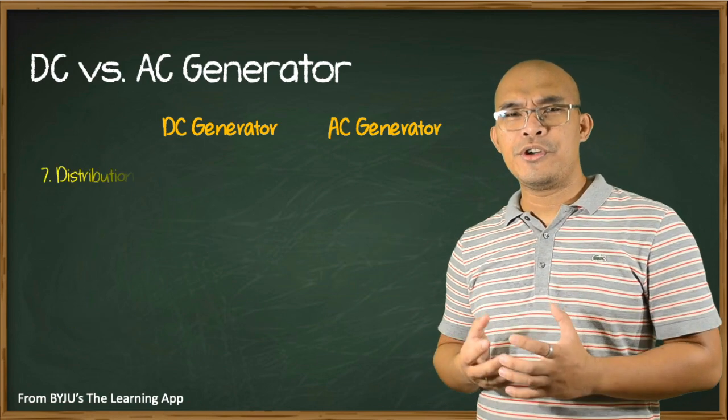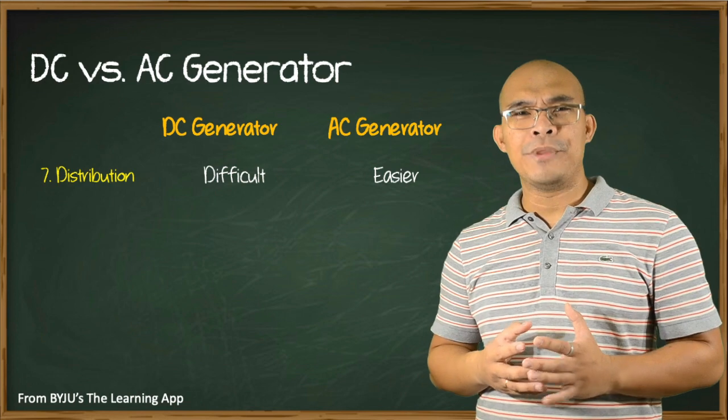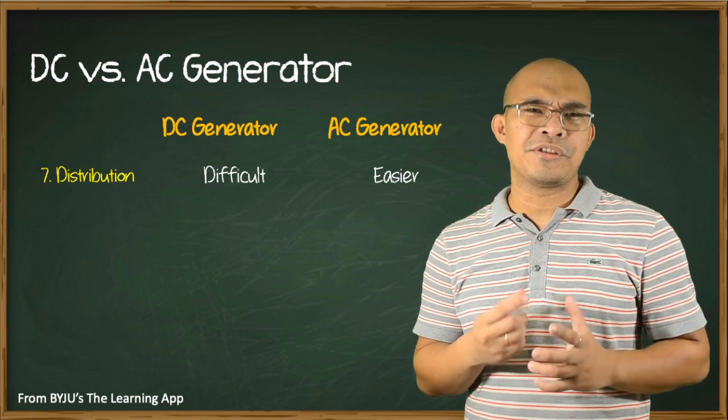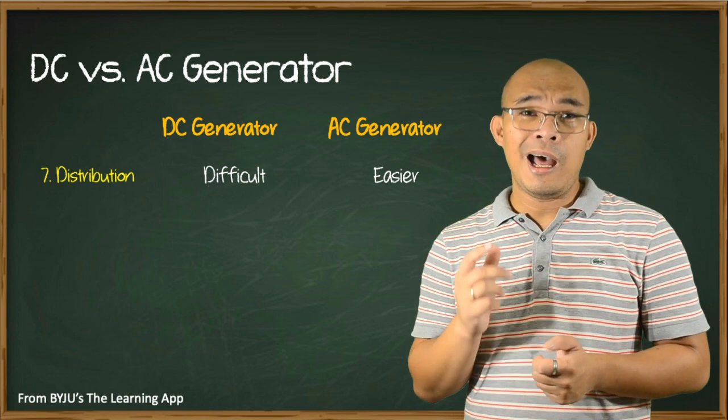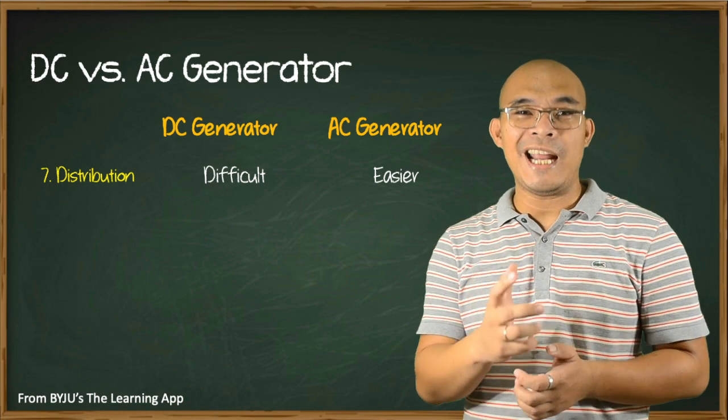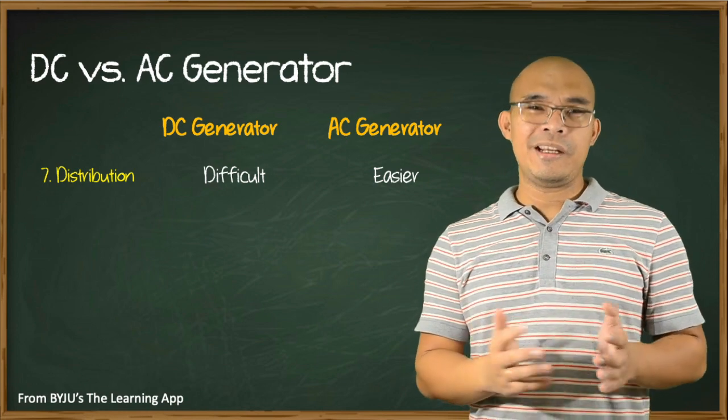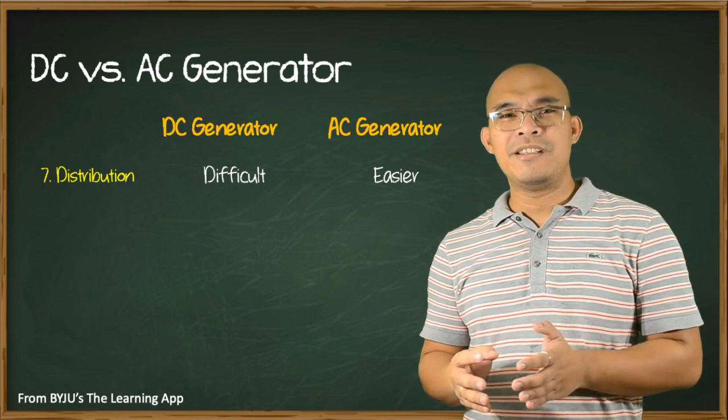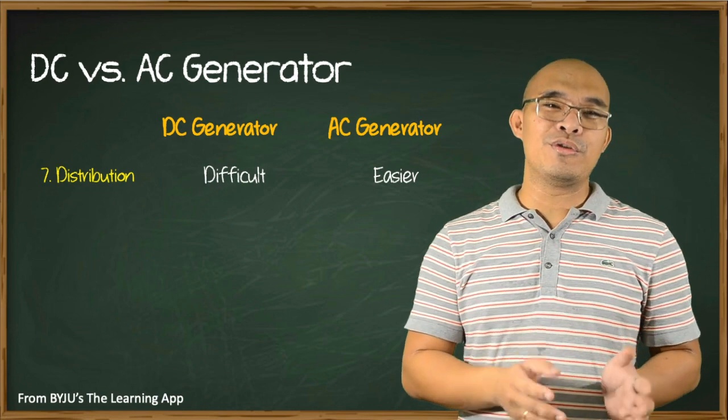With respect to distribution and transmission, the output of DC generators is difficult to distribute as transformers cannot be used. On the other hand, the output from AC generators is easy to distribute using a transformer.